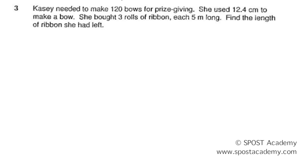The first sentence says that Casey needs to make 120 bows for prize giving. She used 12.4 cm to make a bow. So for every bow, she needs 12.4 cm.